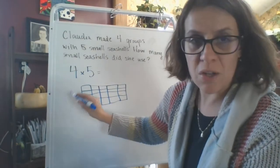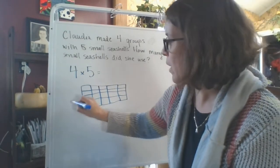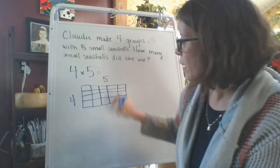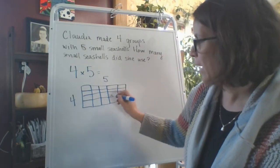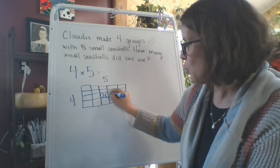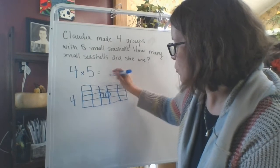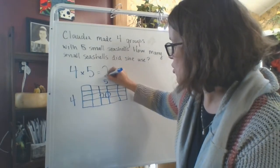But if we were using our area model, which we are practicing quite a bit, we know this is five and this is four. And we have a total area of 20. So we just solved it. I'm just going to move my five down. So it's 20.